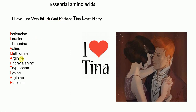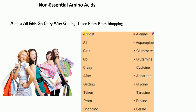Continuing: perhaps P for phenylalanine, Tina T for tryptophan, loves L for lysine, and Harry H — S for histidine. Note that A for arginine appears twice in this mnemonic. So remember: I love Tina very much and perhaps Tina loves Harry — the mnemonic for essential amino acids.